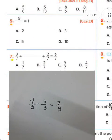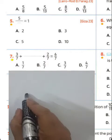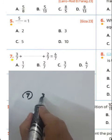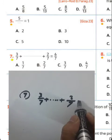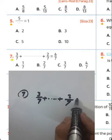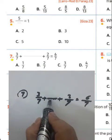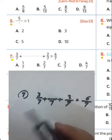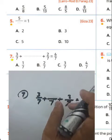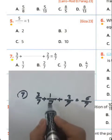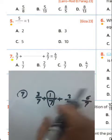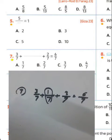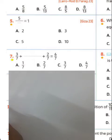Question number seven: we have 3 over 7 plus a blank plus 2 over 7 equals 6 over 7. The denominator stays 7, and 3 plus 2 equals 5, then 5 plus 1 equals 6, so the missing value is 1 over 7. Choose letter A.